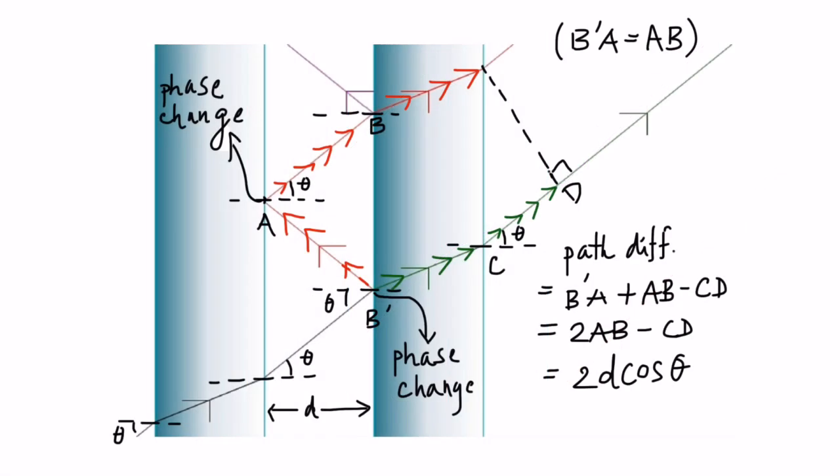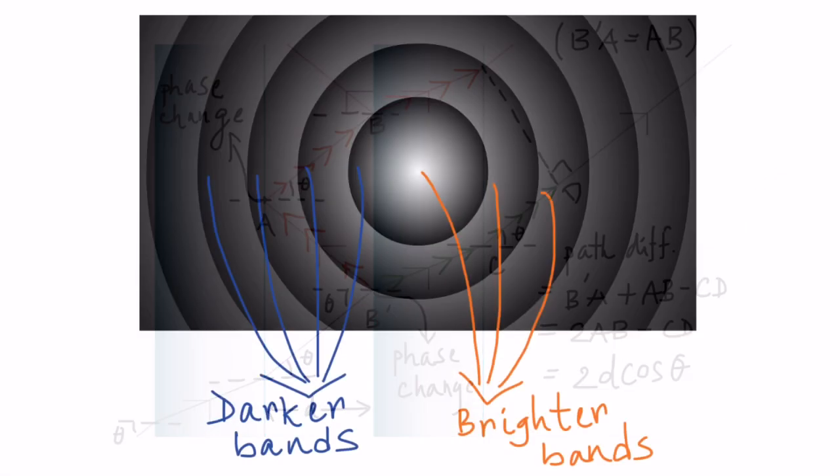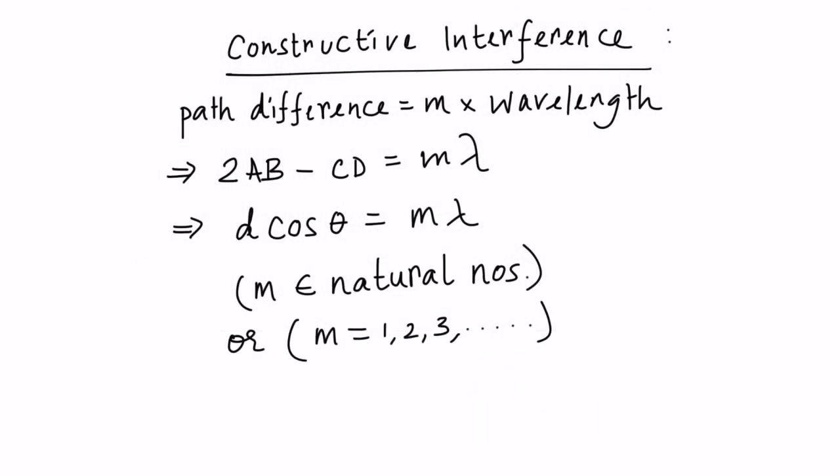To summarize, in a Fabry-Perot interferometer, light is partially reflected and transmitted between two parallel mirrors multiple times, each time splitting the wave's amplitude into two fractions. This results in a path length difference between subsequent transmissions, which produces an interference pattern on the screen. The pattern consists of bright and dark bands with high resolution as a result of interference from a large number of light rays.